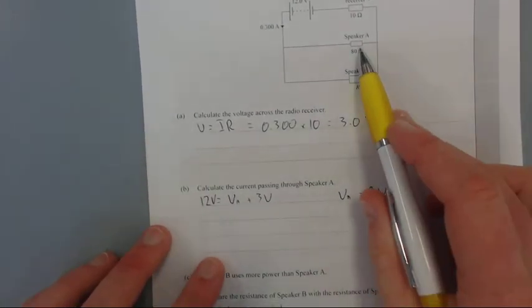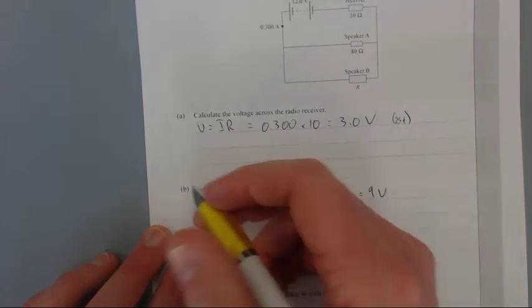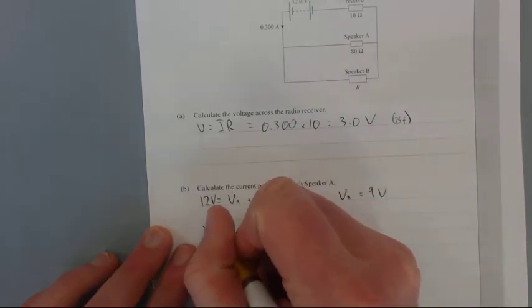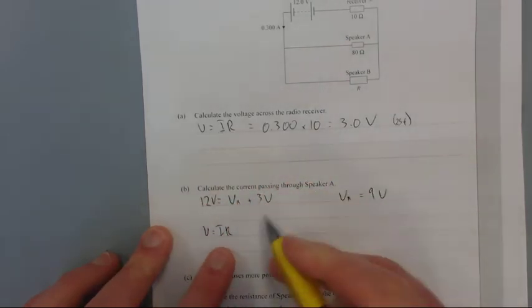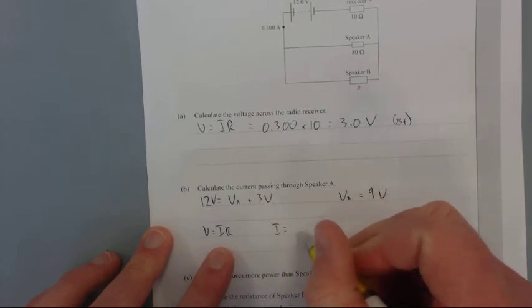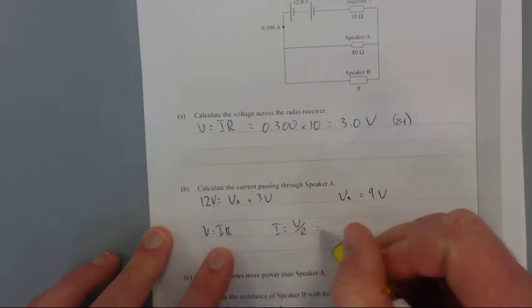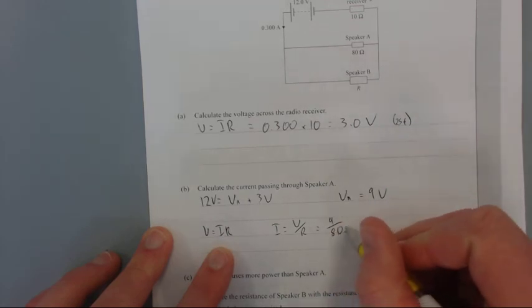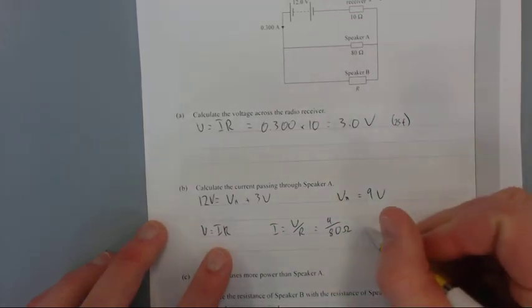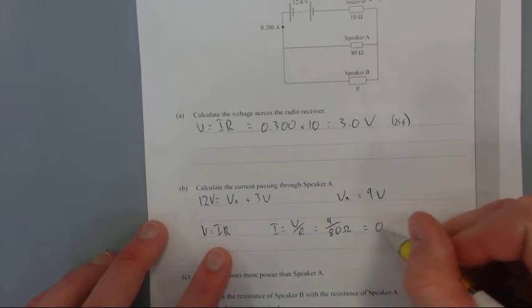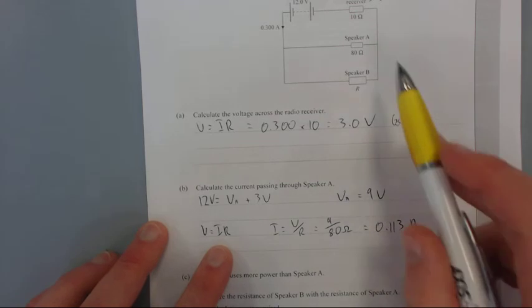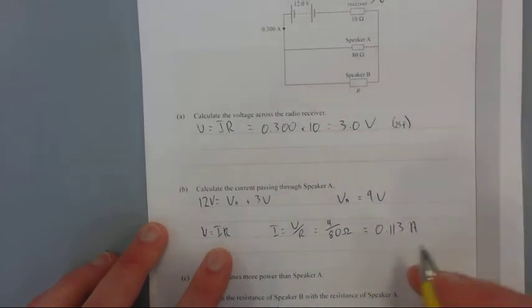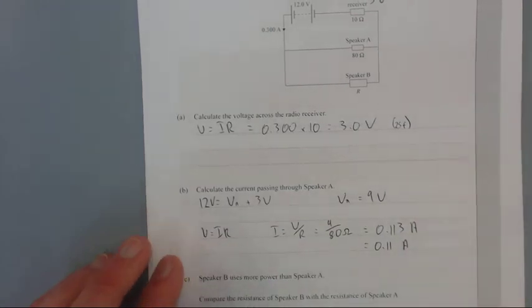Now we have its voltage and its resistance, we can work out the current. V equals IR, we rearrange that for current: I equals V over R, equals 9 volts over 80 ohms, which equals 0.113 amps. But because 80 ohms is only 2 significant figures, our answer needs to be 2 significant figures, which equals 0.11 amps.